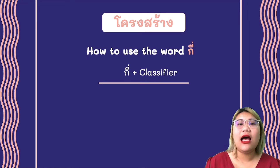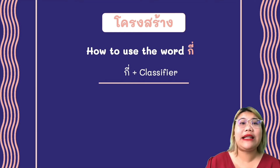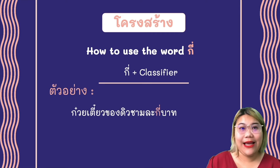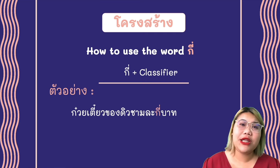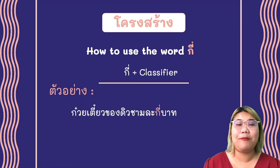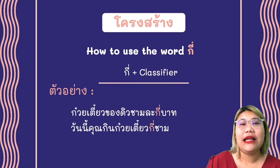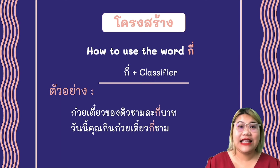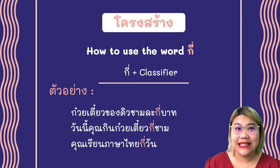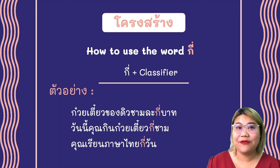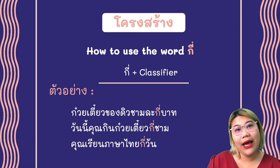The next pattern is how to use the word กี่, which is a question word followed by a classifier. For example: กวยเตียว ของ ดิว ชามละ กี่บาท — we use กี่ followed by บาท (Thai currency), meaning 'how many baht.' And วันนี้ คุณกินกวยเตียว กี่ชาม — how many bowls of noodle do you eat today? กี่ชาม, where ชาม is the classifier for bowl. And คุณเรียนภาษาไทย กี่วัน — how many days do you study Thai? กี่วัน, where วัน is the classifier for day.